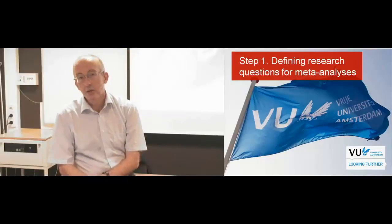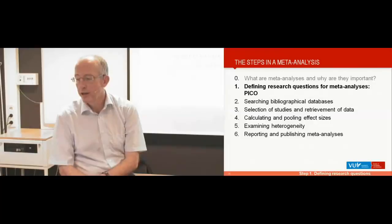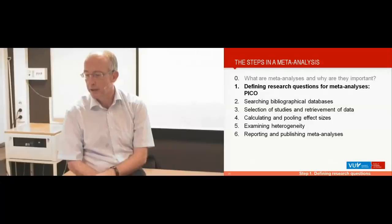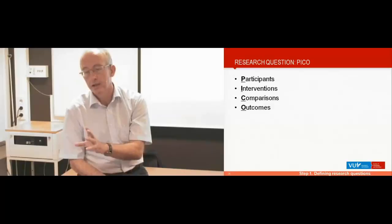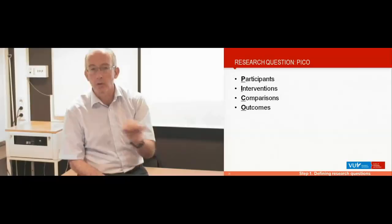The first step in doing a meta-analysis is that you have to define your research question. We use the PICO acronym for that. PICO stands for participants, interventions, comparisons, and outcomes. You have to define your research question using this acronym: the participants, the interventions, the type of control group or comparisons, and the outcomes you're interested in.